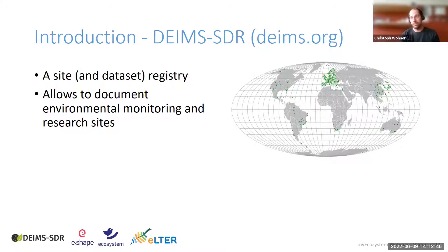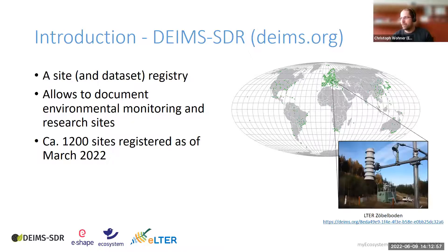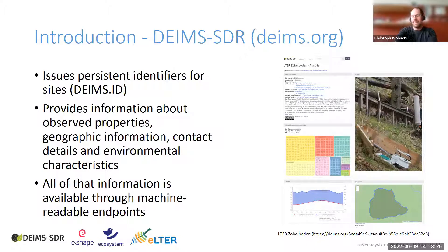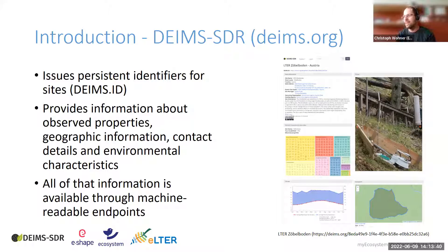This map shows all sites registered on DEIMS — every dot represents one site, and we have more than 1,200 sites. For each site, we feature a variety of information. DEIMS is used in a number of European Union projects such as E-SHAPE, LTER, and its global umbrella network eLTER. We issue persistent identifiers for sites and provide information about observed properties, geographic information, contact details, environmental characteristics, images, and project-related information.